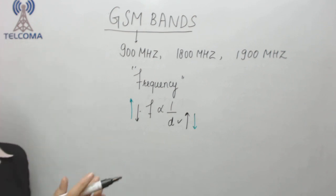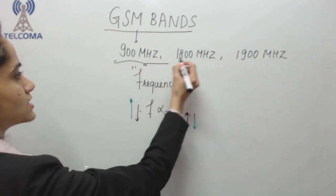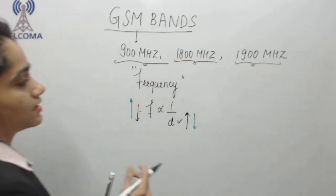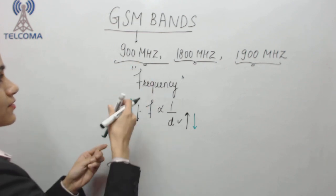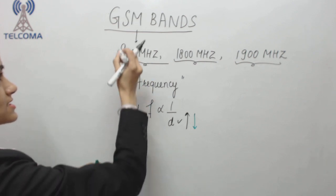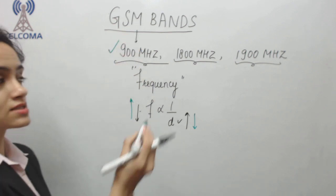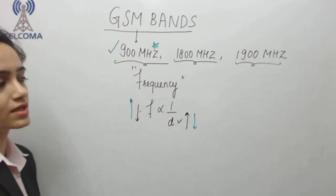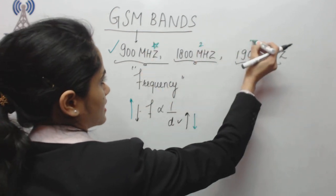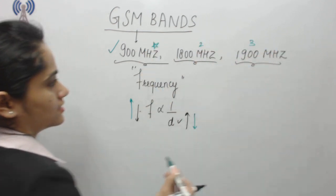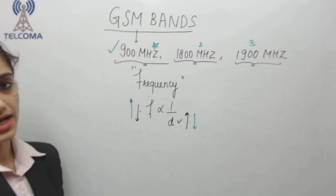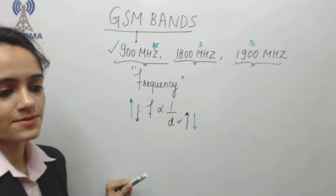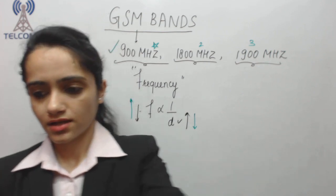As per the standards, for GSM we have these three bands available. The band with lesser frequency will cover more distance, so that band will be preferred most, followed by the next, and then the next. Each band has a specific capacity and specific range of frequencies.